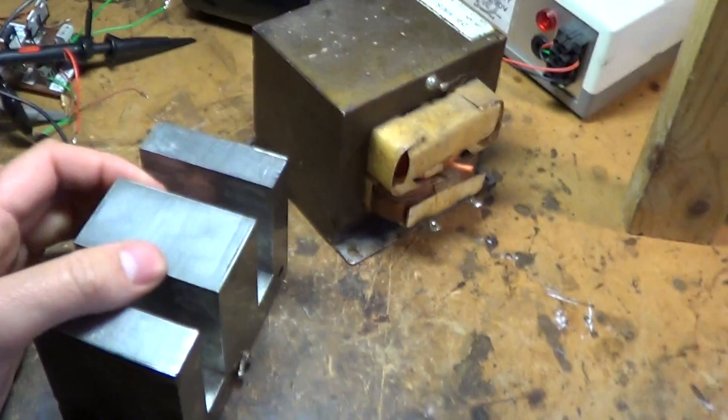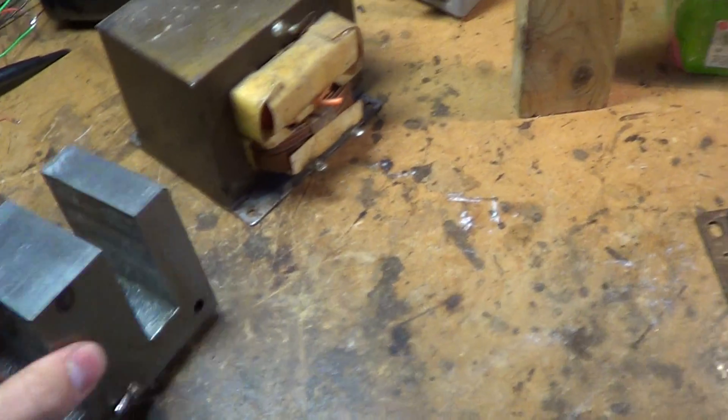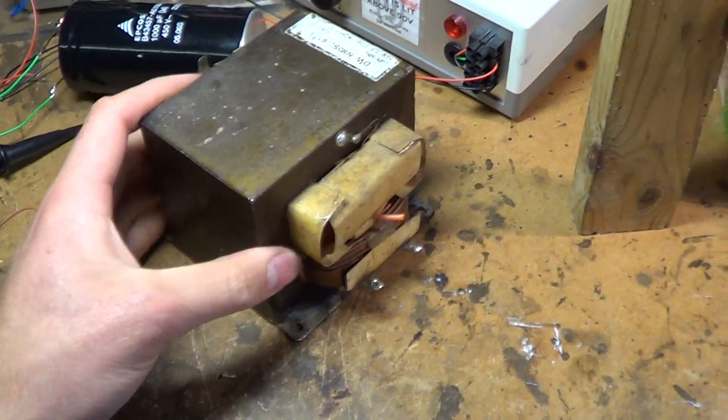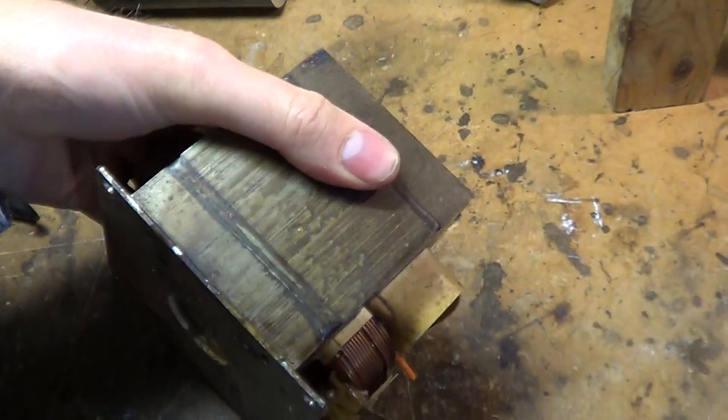Hey Jared, just an answer to what you were asking about how I got the core apart. Here's a typical microwave oven transformer.